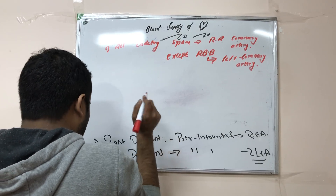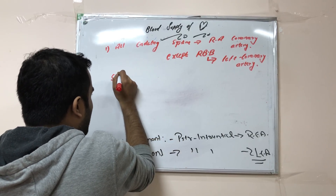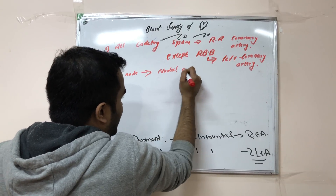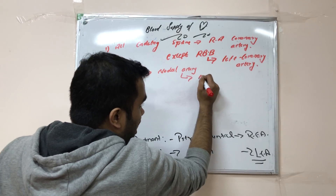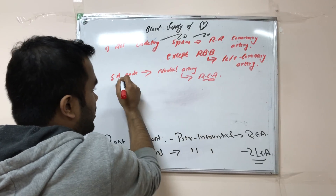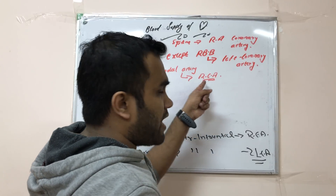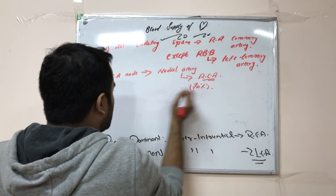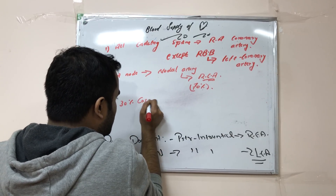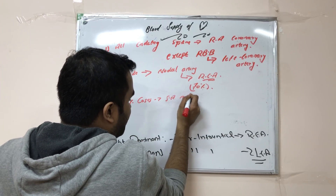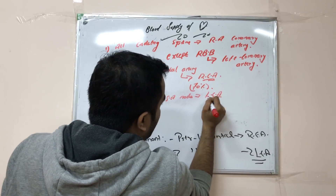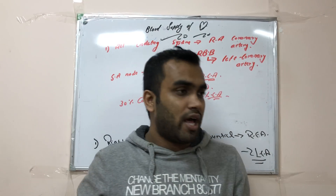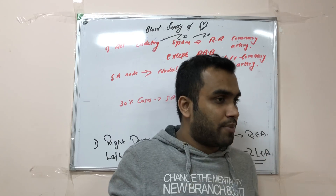The SA node is supplied by the nodal artery, which is a branch of the right coronary artery in 70% of cases. In 30% of cases, the SA node can also get its supply from the left coronary artery. The dominance of the heart is determined by the posterior interventricular artery. Those are all the key points about the arterial supply of the heart.